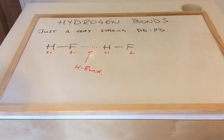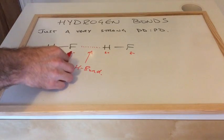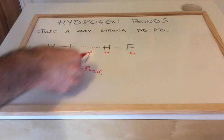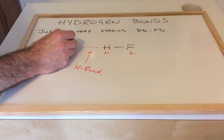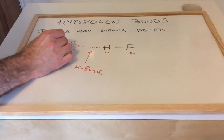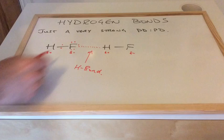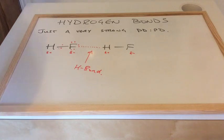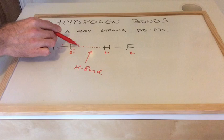When you draw hydrogen bonds, the examiner is actually looking for three things in your answer. They're looking for the dipole. They're looking for the hydrogen bond labelled up, obviously. But they also want you to draw the electrons around the electronegative atom. I've put all seven in there for the fluorine and the hydrogen one as well.